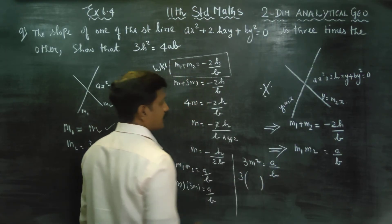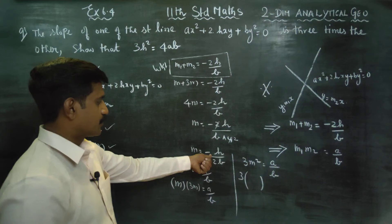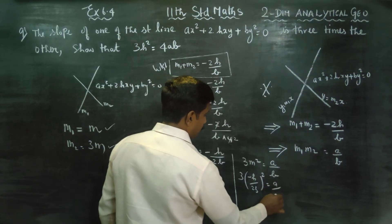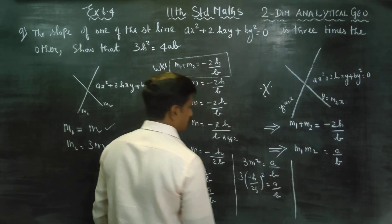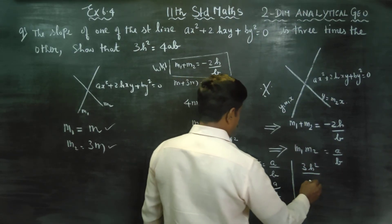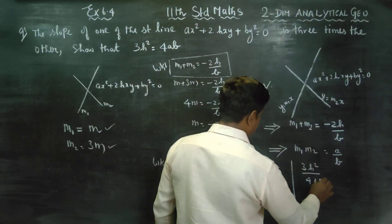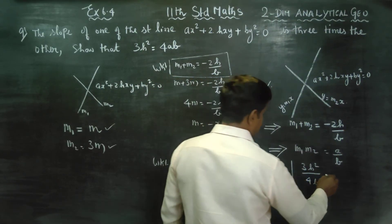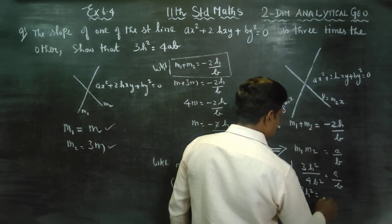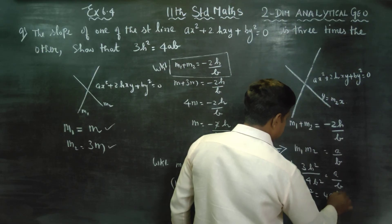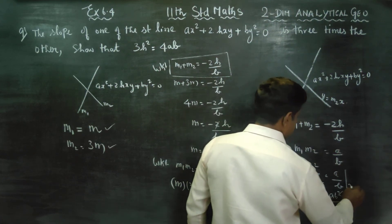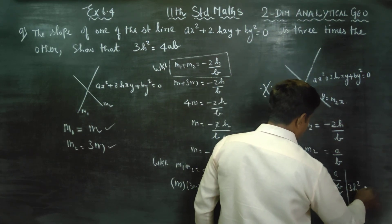3 into, what is my m square? m square, now, we will be able to do it. m square is h square by 4b square. b square can slide, therefore, your final answer will be 3h square is equal to 4ab.